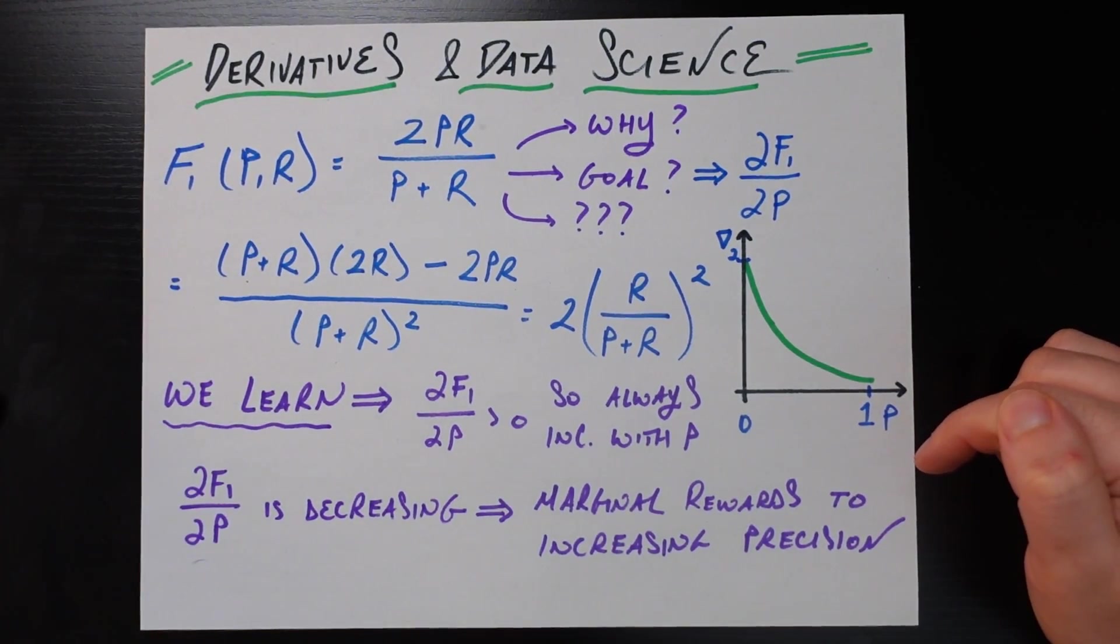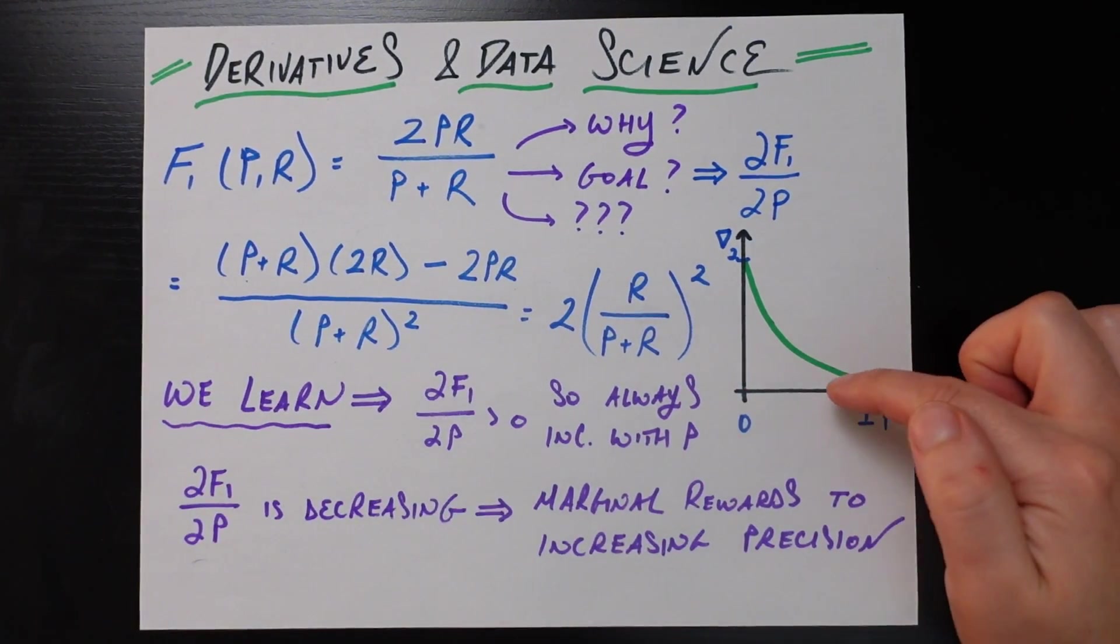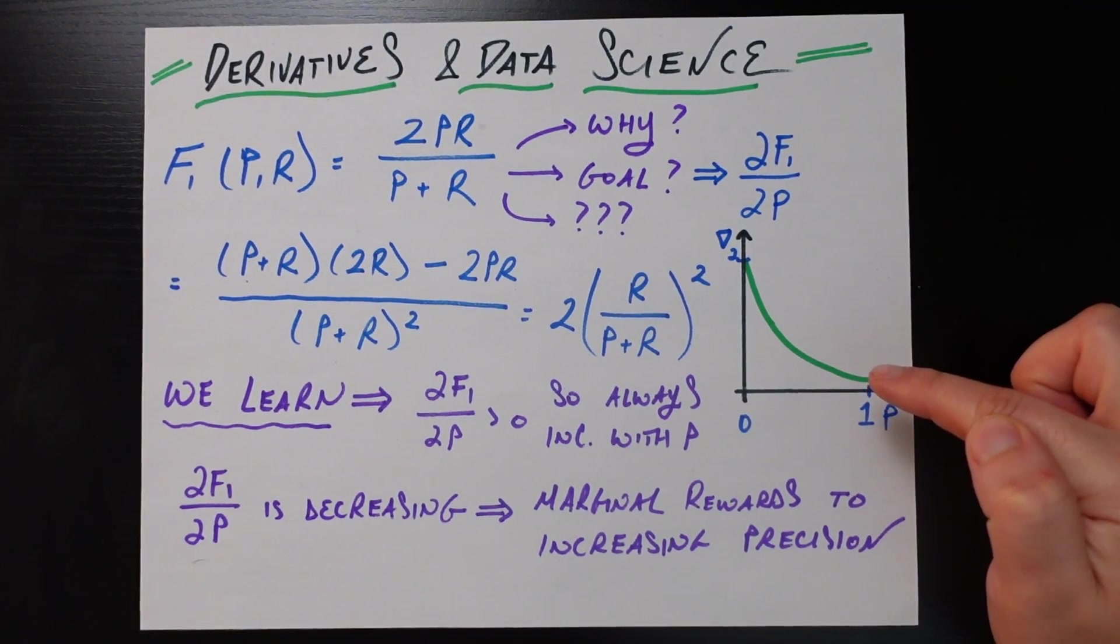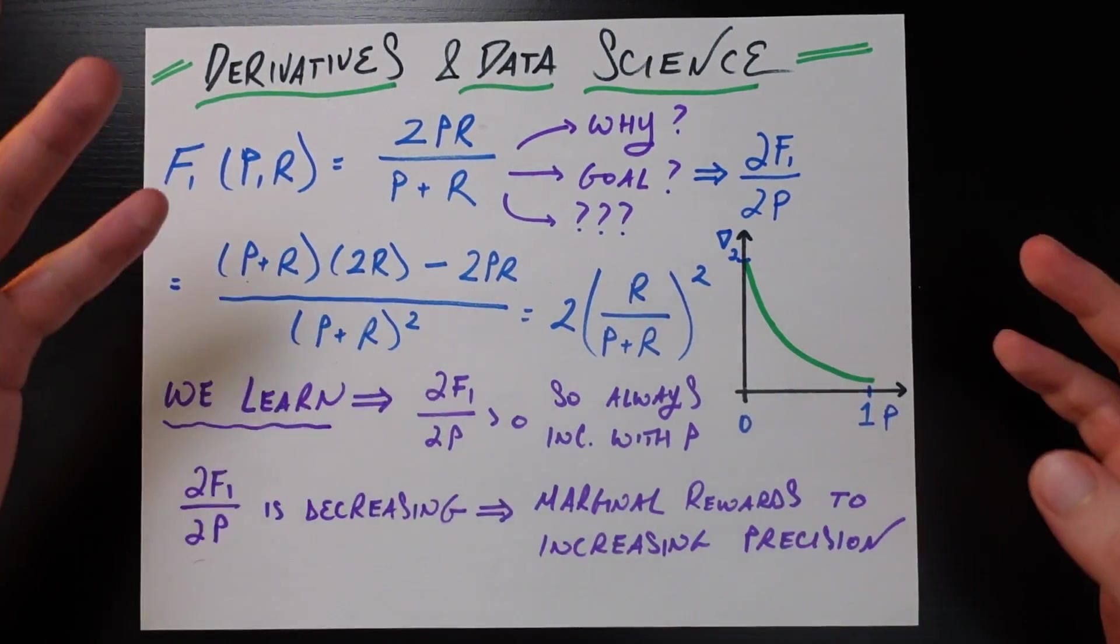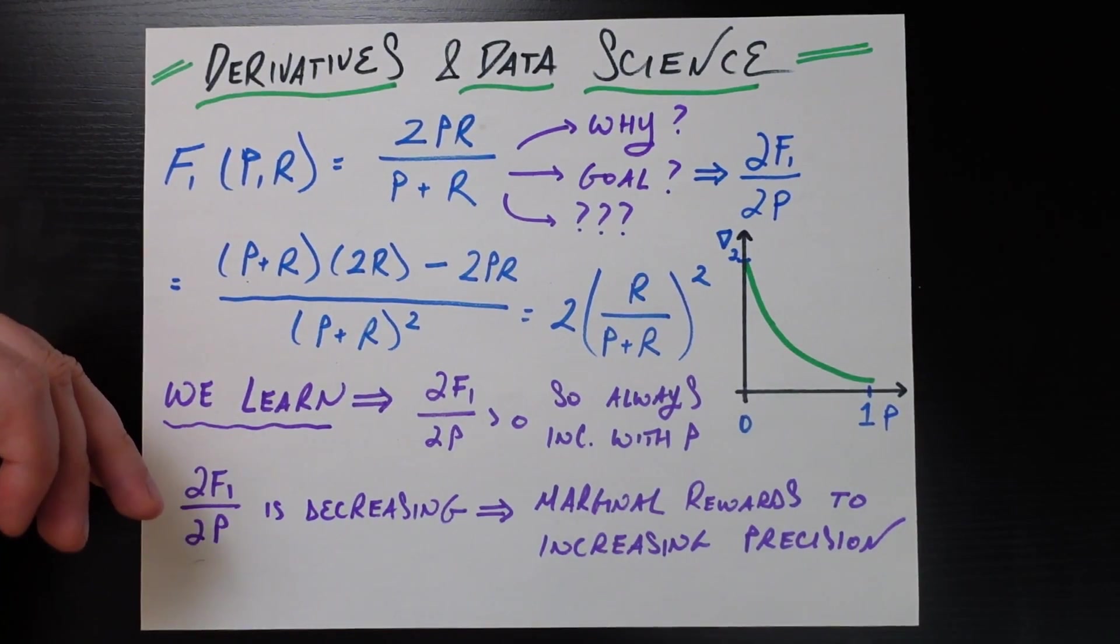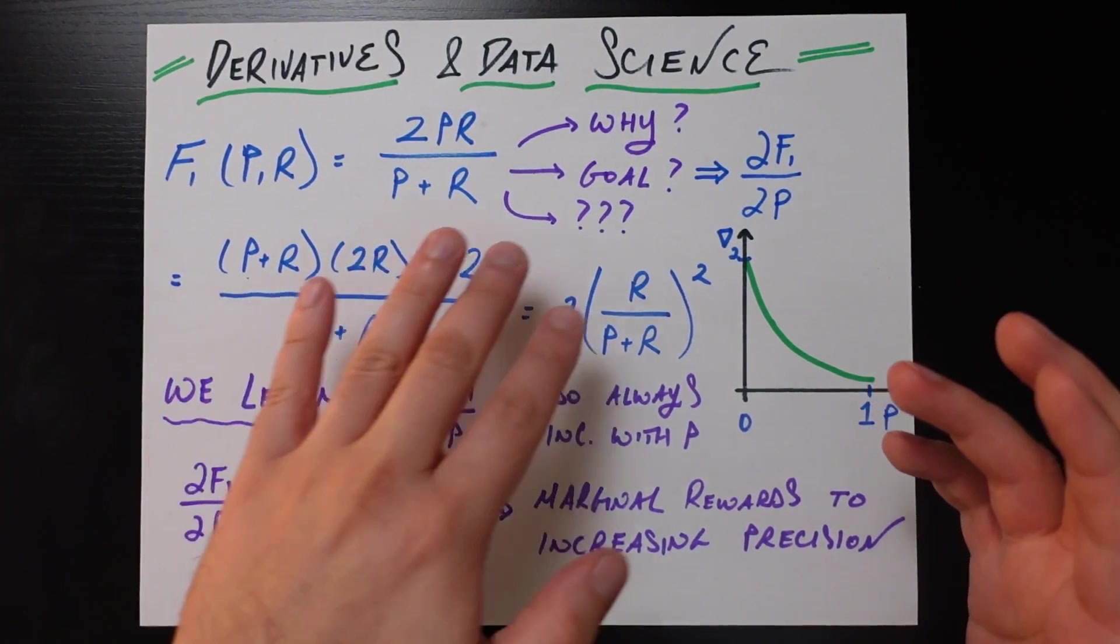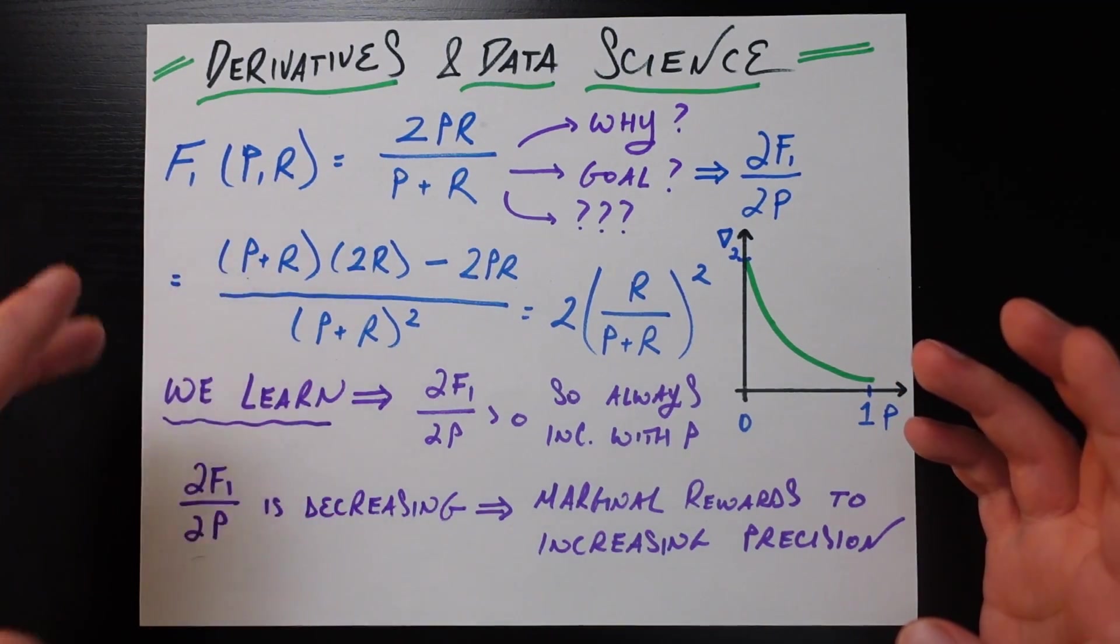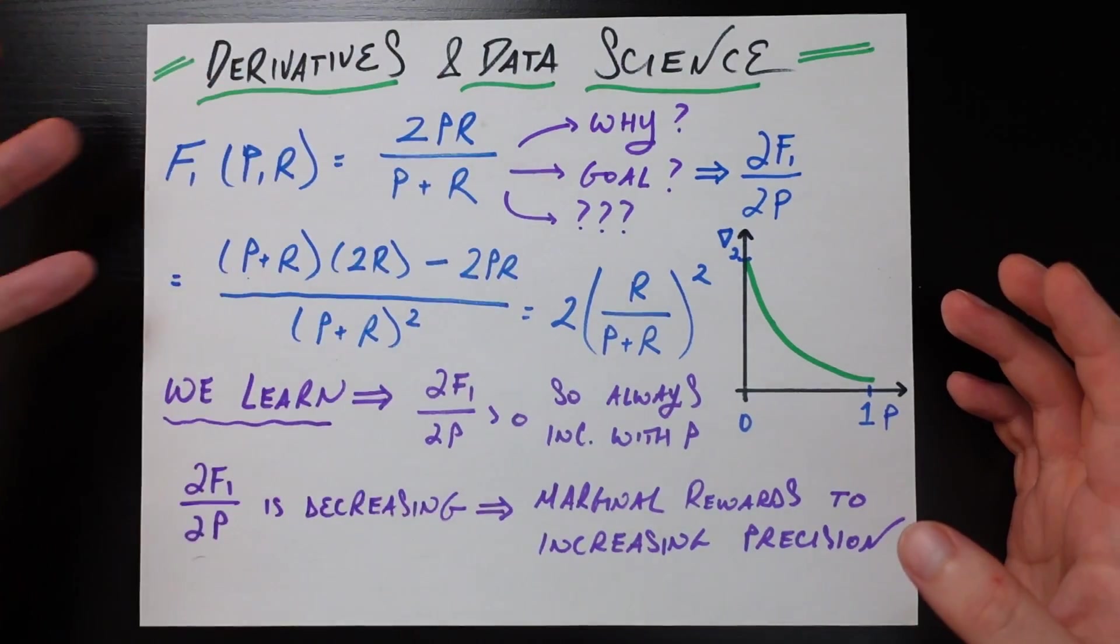If you're able to get it from trash to something slightly better, I'm going to give you a lot of gains in your F1 score. However, if your precision is already really high at like 0.9 or 0.95, then that same incremental increase in precision is going to give you a positive reward, as we saw with the first observation. But that incremental increase, that marginal reward, is going to be smaller and smaller and smaller.